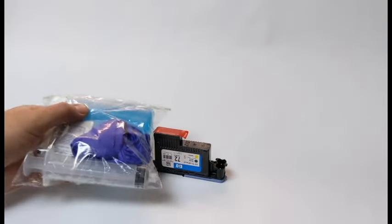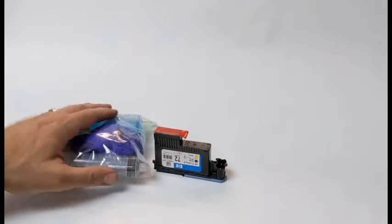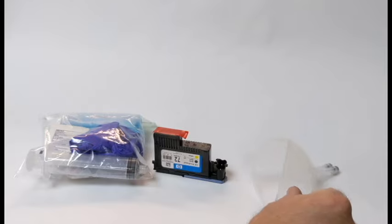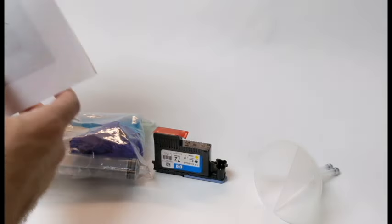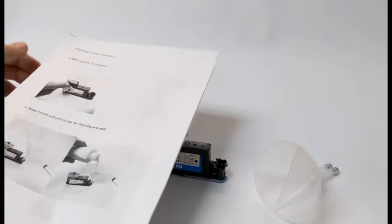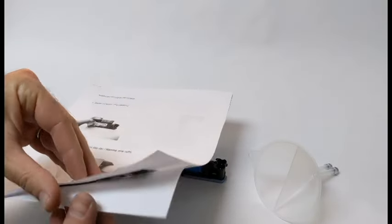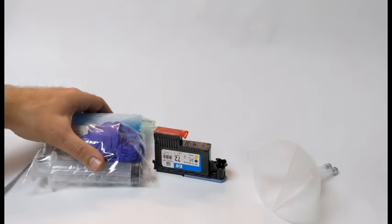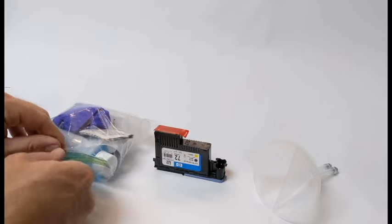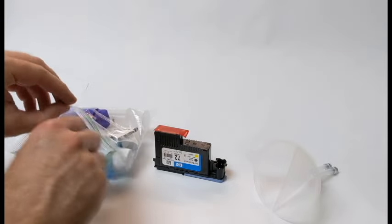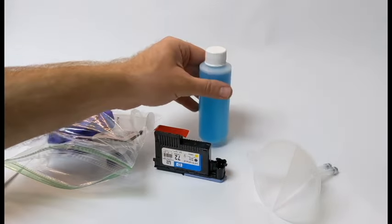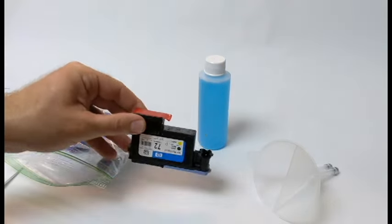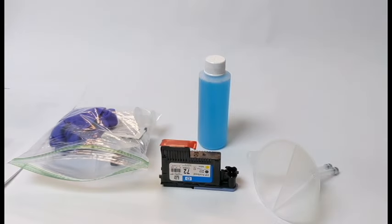The solution LPS has developed accomplishes a number of things. It positively identifies the problem print head. It removes air from the print head. It flushes the print head with a cleaning solution to remove thickened ink and clean the nozzles. It refills the print head with ink. It removes all the air from the ink tube system. And finally, and probably most important, it uses external print head needle seals to keep out any future air, saving the cost of a new or rebuilt ink tube system.